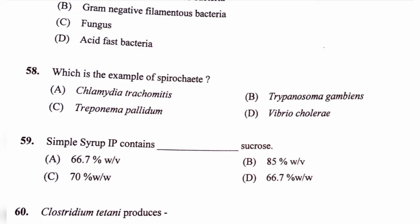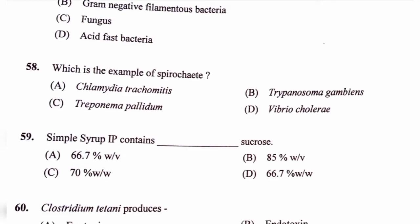Question number 58. Which is an example of spirochete? Option A, Chlamydia trachomatis; option B, Trypanosoma gambiense; option C, Treponema pallidum; option D, Vibrio cholerae. The correct answer is option C, Treponema pallidum.